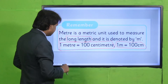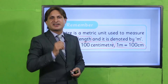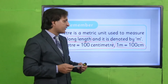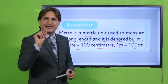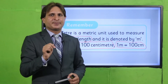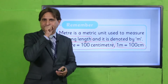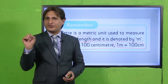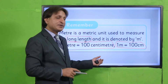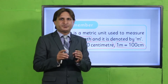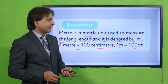Jaisa ke yeh screen mere paas lagi hui hai ya board hai, aur iski jo length hai, isko measure karne ke liye main meter scale use karunga. Centimeter scale bhi use kar sakta hoon, aur agar non-standard units use karni hain toh thread ya pencil use kar sakte hain. Agar standard units use karni hain toh centimeter scale aur meter scale dono use ho sakte hain. Meter scale isliye use kiya jaata hai kyunki jo long lengths hoti hain — jaise length of a wall, length of a door, length of a window, length of the floor — unhe measure karne ke liye hum meter scale use karte hain. Aur kabhi kabhi ek strip hoti hai jisko hum measuring tape bolte hain, wo bhi use karte hain.